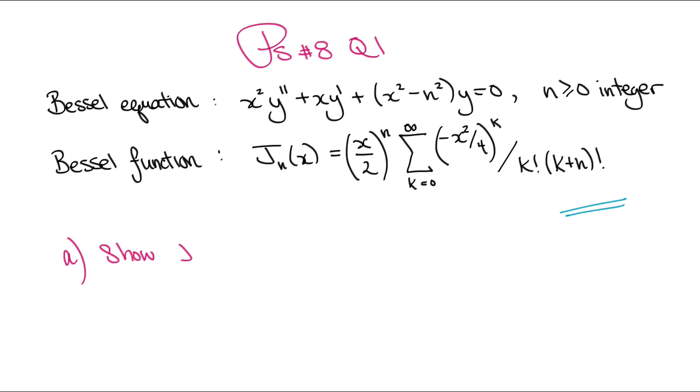Next for 1a, what we want to do is show this recurrence relation: jn plus 1 of x equals 2n over x times jn of x minus jn minus 1 of x.